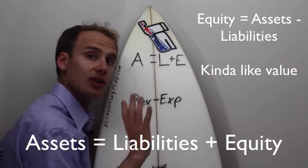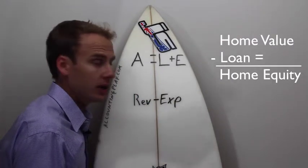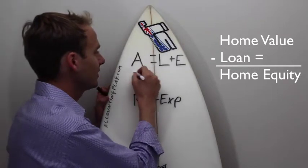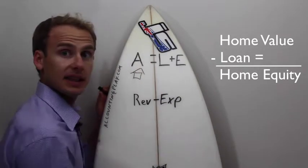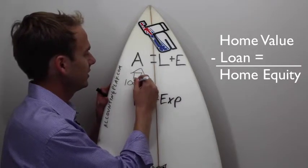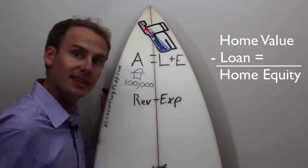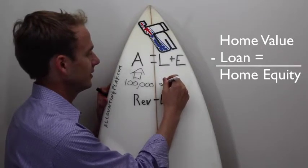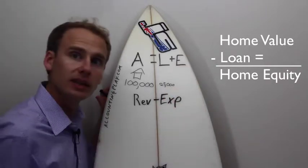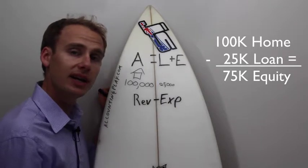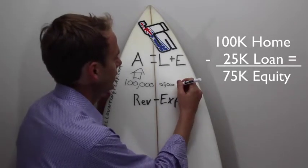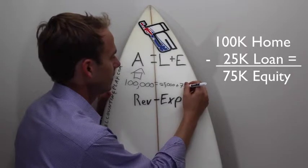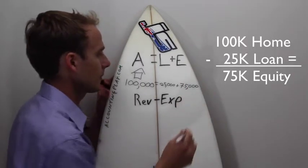So, if you take your home, for example, that you own — let's say that asset of the house is worth $100,000 in the Midwest, and the loan is $25,000. What's your equity? Well, if you were to sell that, you'd have to repay the loan. So your equity would be $75,000. Assets equals liabilities plus this equity figure of $75,000. Highly simplistic.